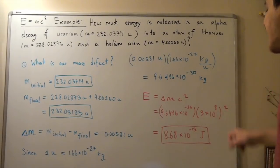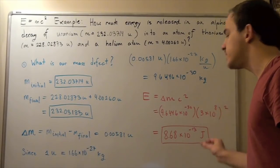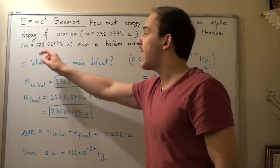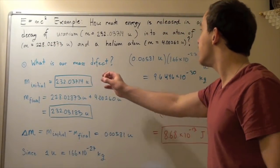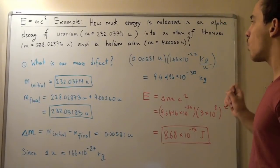And we get 8.68 times 10 to the negative 13 joules of energy was released when this alpha decay occurred and uranium became one atom of helium and one atom of thorium.